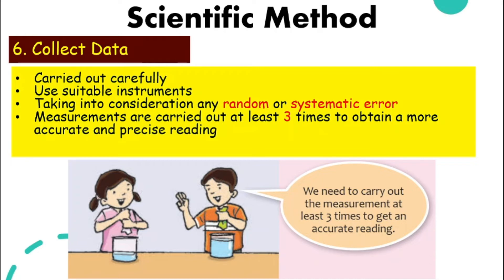The measurements need to be carried out at least three times so that we can have a more accurate and precise reading. Meaning, we repeat the experiment three times so that we have three sets of data. Then we can use a table to record our data.